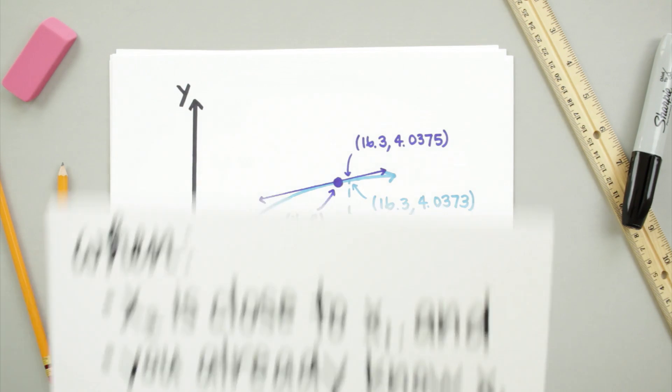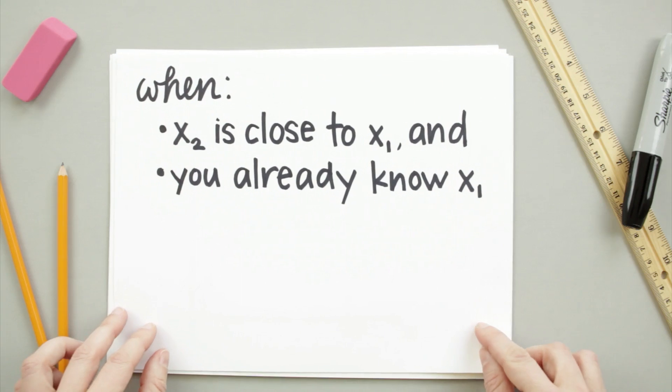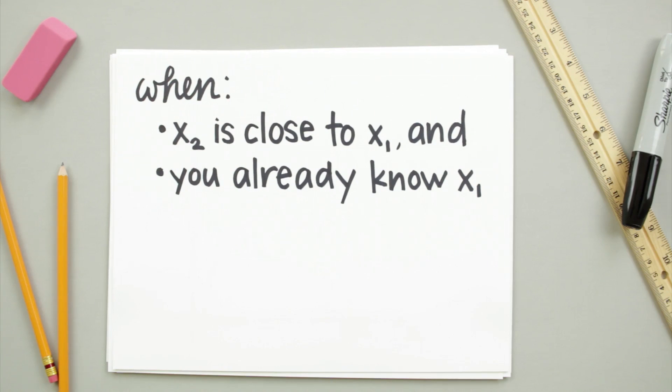So if you think about linear approximation, you can say that, in general, you can find the linear approximation at a point x2, when x2 is close to x1, and when you already know information about x1.